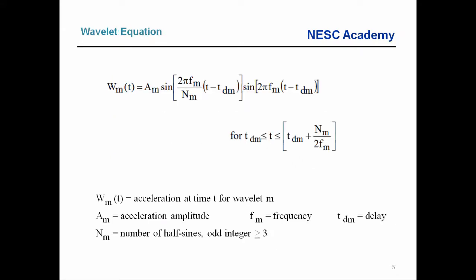Here's the wavelet equation, and it's a lot more simple than it might look. For an individual wavelet, w sub m is the acceleration at time t for wavelet m. We have an acceleration amplitude a sub n, and two sine functions. The second of the two sine functions is really the main sinusoidal oscillation — it's 2π f sub m, where f sub m is the frequency of the wavelet — with t as the independent variable time, and t sub dm as a delay time. The wavelets will be staggered with some delay.